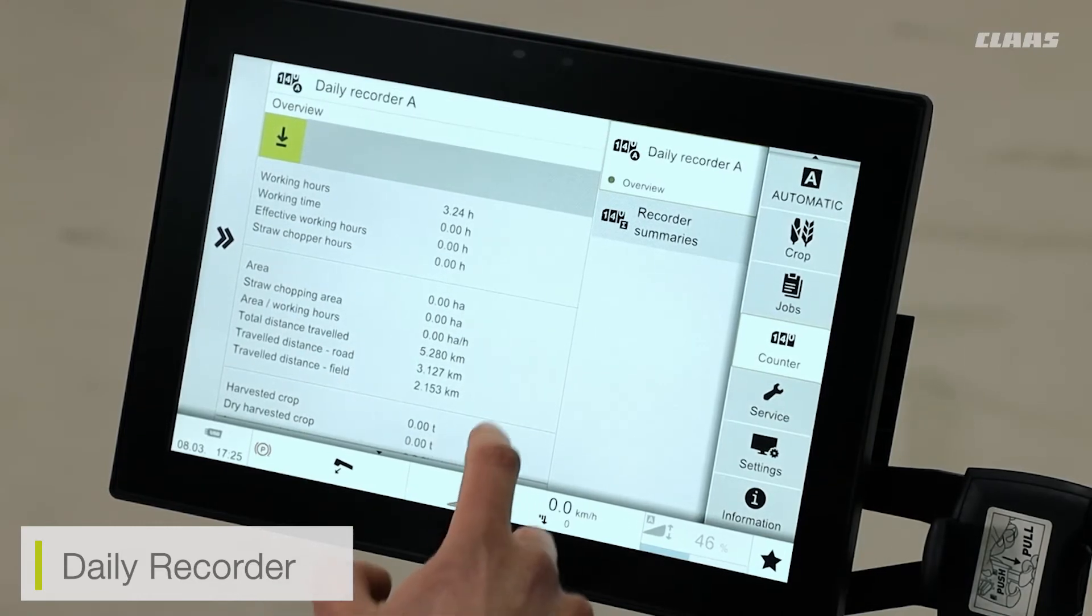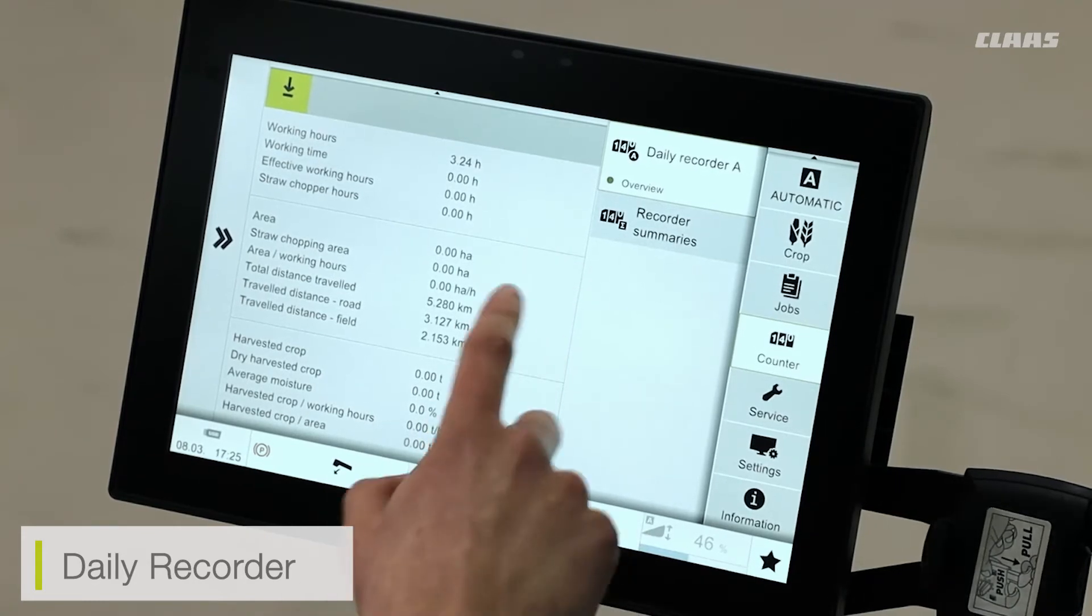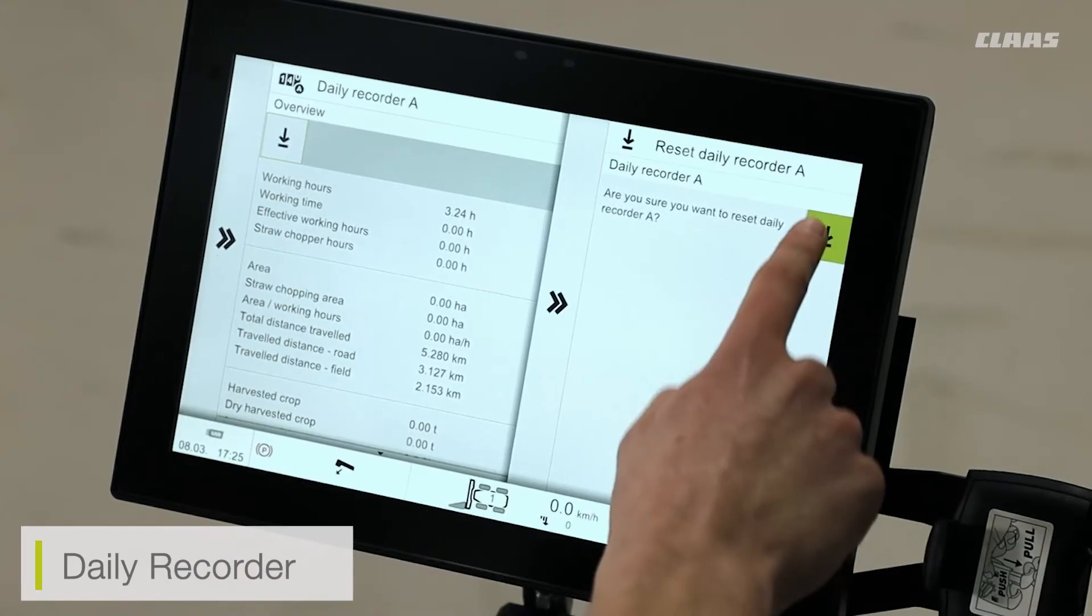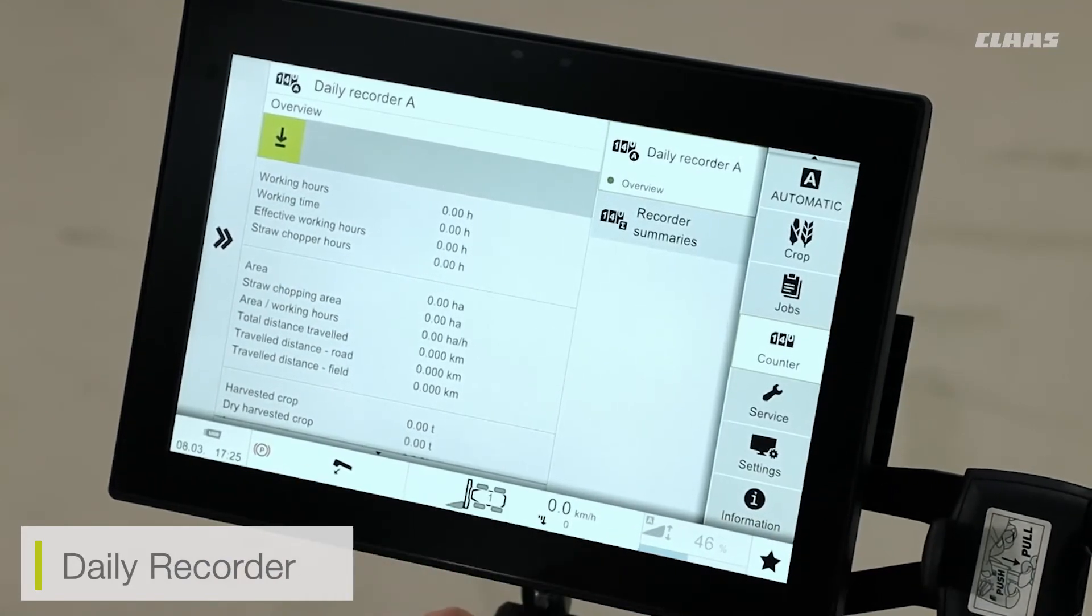For example, since the last reset, I can see the various speeds and areas my machine has covered. To reset this menu, I can click on the top and slide the sidebar down and release to reset my counters, which we can see there.